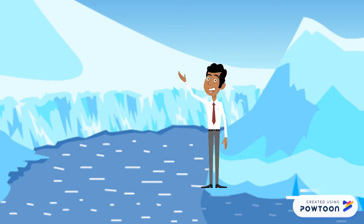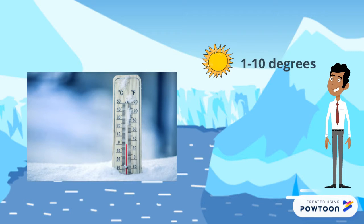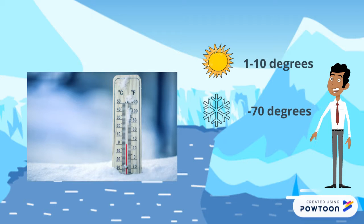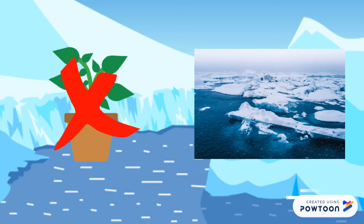The polar desert is very cold, windy, and it has low precipitations, most of them solid. Temperatures in the polar desert in summer are between 1 and 10 degrees. On the contrary, in winter temperatures are around minus 70 degrees. Soil here is infertile and with a lot of salinity. Sometimes the soil is frozen and other times it is melted.